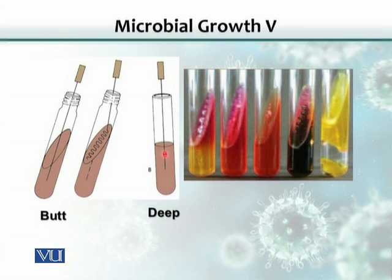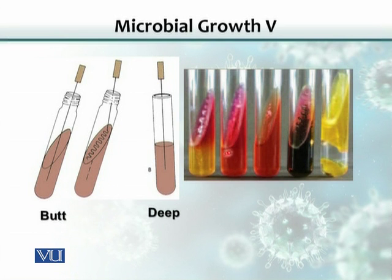If we do not make a slant and instead pour our solid medium into a tube straight and then stab it with the inoculum, this is called a deep. We can make solid medium and pour it into tubes like these, and then streak our bacterium for testing for various chemicals and reactions.